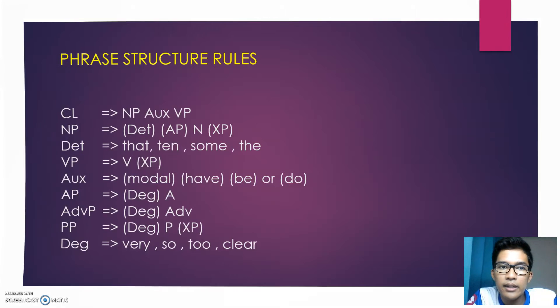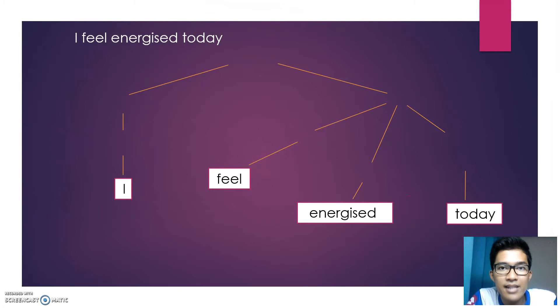We are going to look at the example. This is the first example, the simplest example. For this example, 'I feel energized today,' when we look at the sentence we need to break it down into constituents. What is constituent? Constituent is a group of words that can form a larger unit. For this example, we have two constituents which are 'I' and 'feel energized today.'